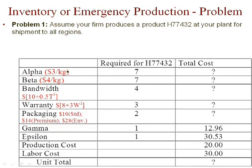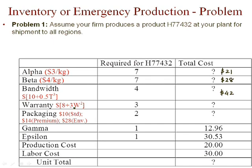For $3 per kilogram and 7 kilograms, we incur $21 for alpha, and 7 times 4 gives $28 for beta. For bandwidth, if we substitute t equals 4 in the equation, take the cube of 4, multiply it with 0.5, and then add 10, we get $42. For warranty, substituting the value of 3 in the equation, taking the square, multiplying by 3, and adding 8 gives us $35.